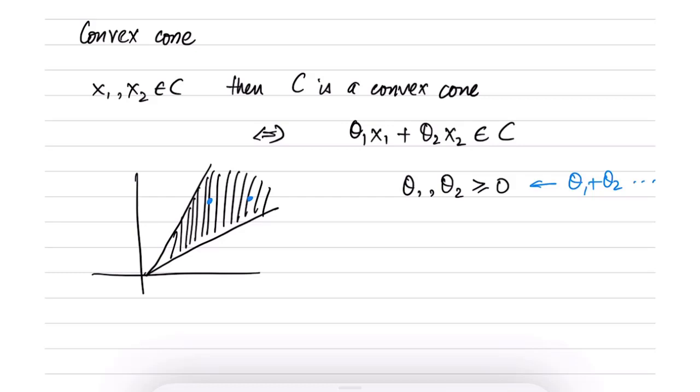So what will be θ1x1 will be this line and θ2x2 will be this line. So let me just mark it properly.